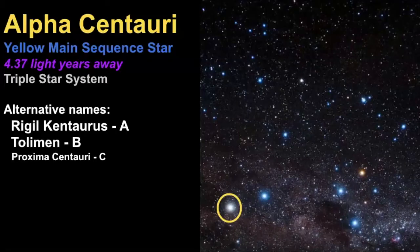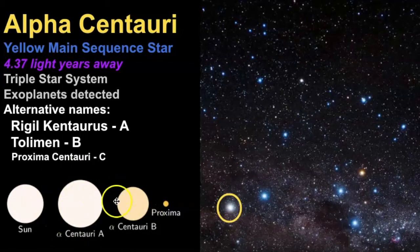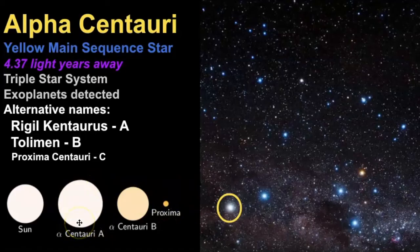Now we're going to take a closer look at these star systems. Alpha Centauri is a yellow main sequence star, but it's not just one star — it is a triple star system and it is the closest star system to our own. It has some alternative names: Rigel Kentaurus is the name for the main star called A, Toliman is B, and then we have Proxima Centauri. This star system is very similar to our own in that it's a yellow main sequence star just like ours. Alpha Centauri A is slightly bigger than the Sun but not by much.